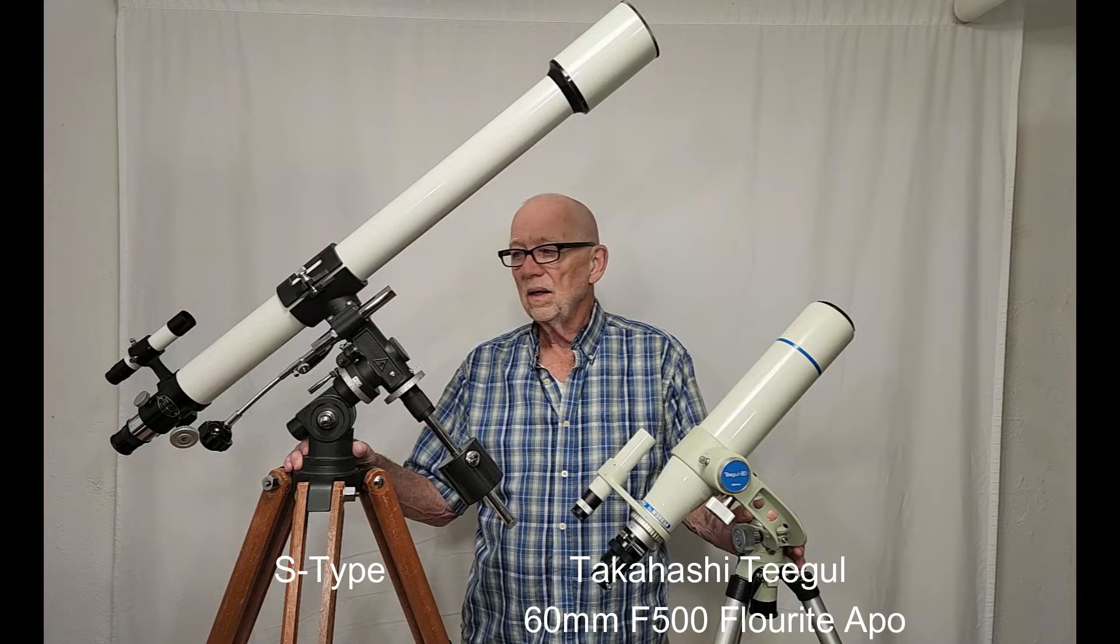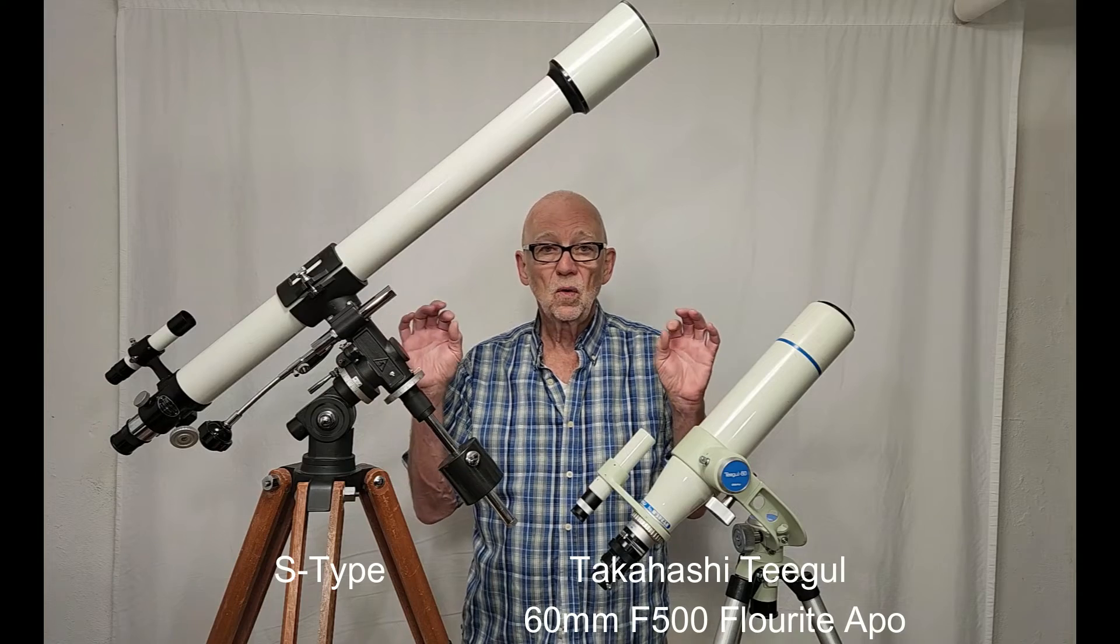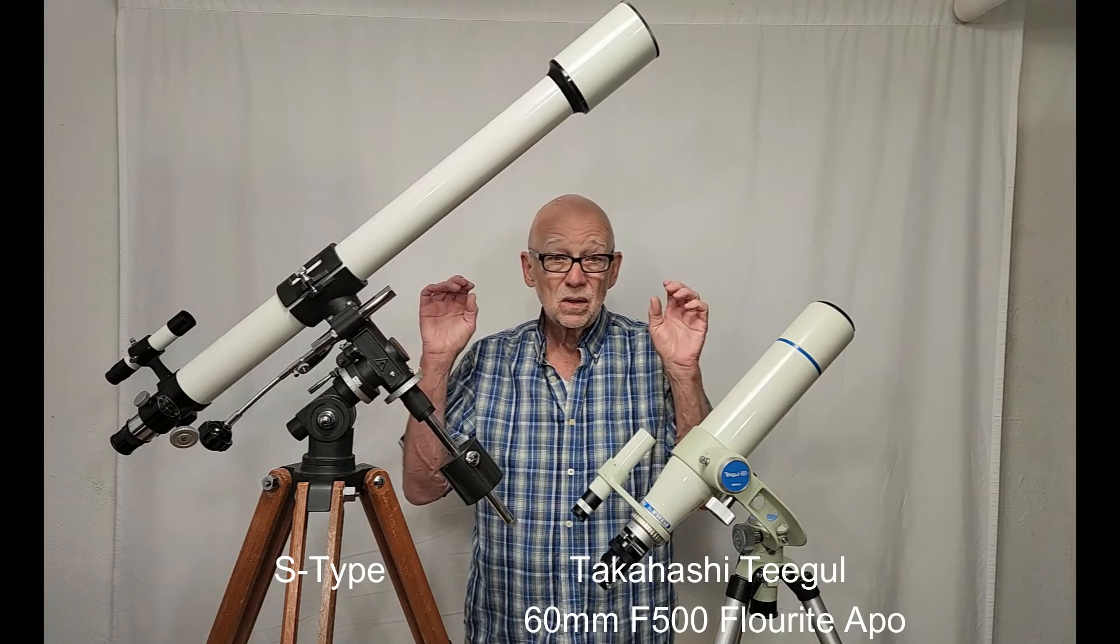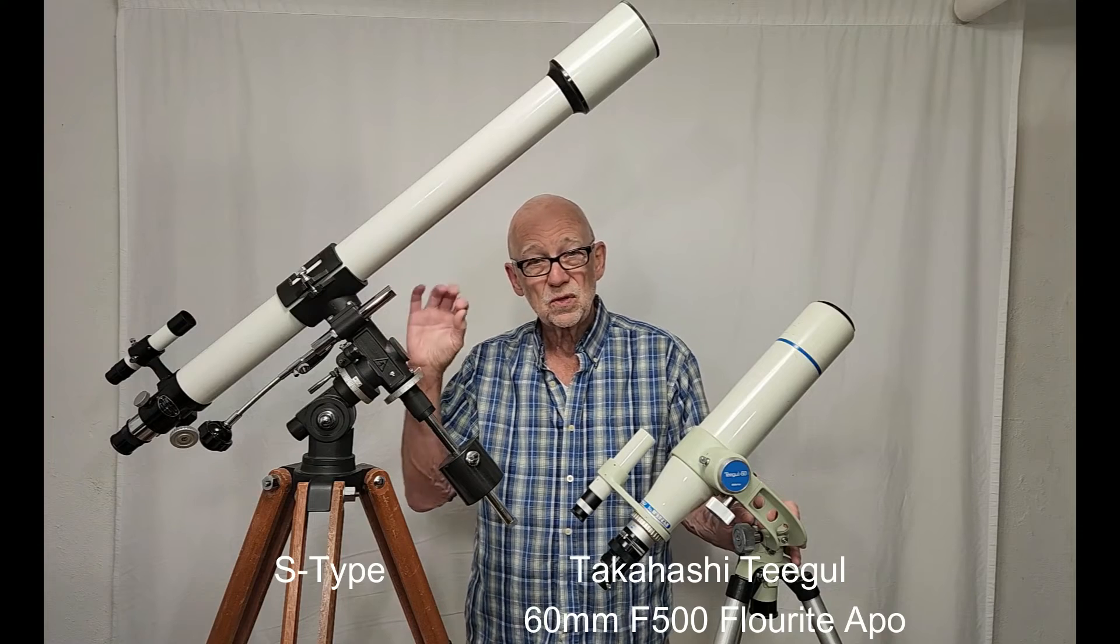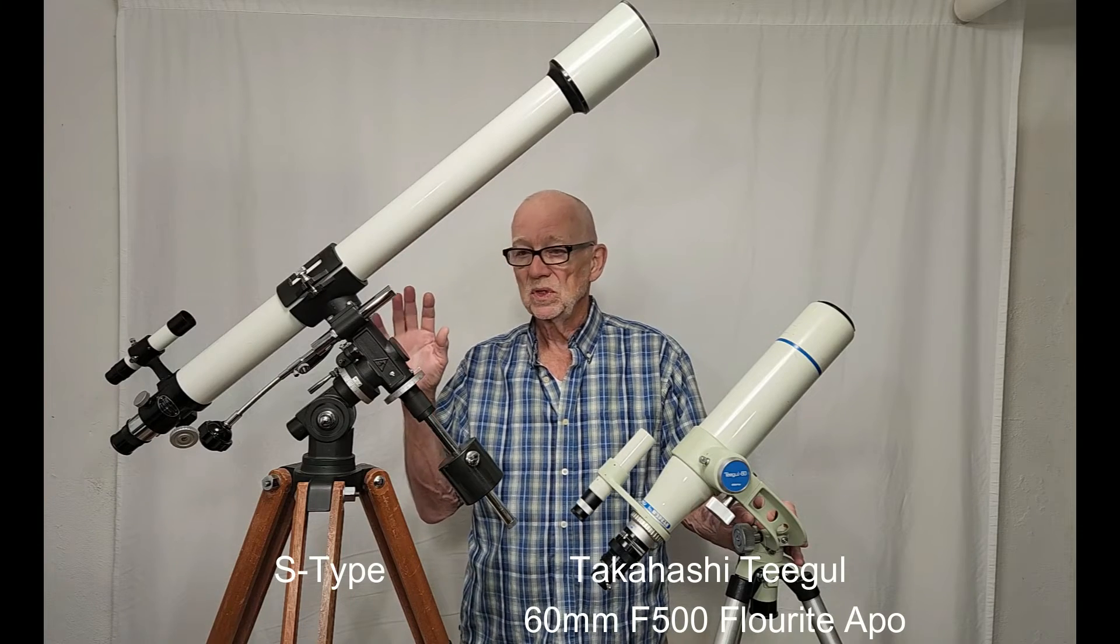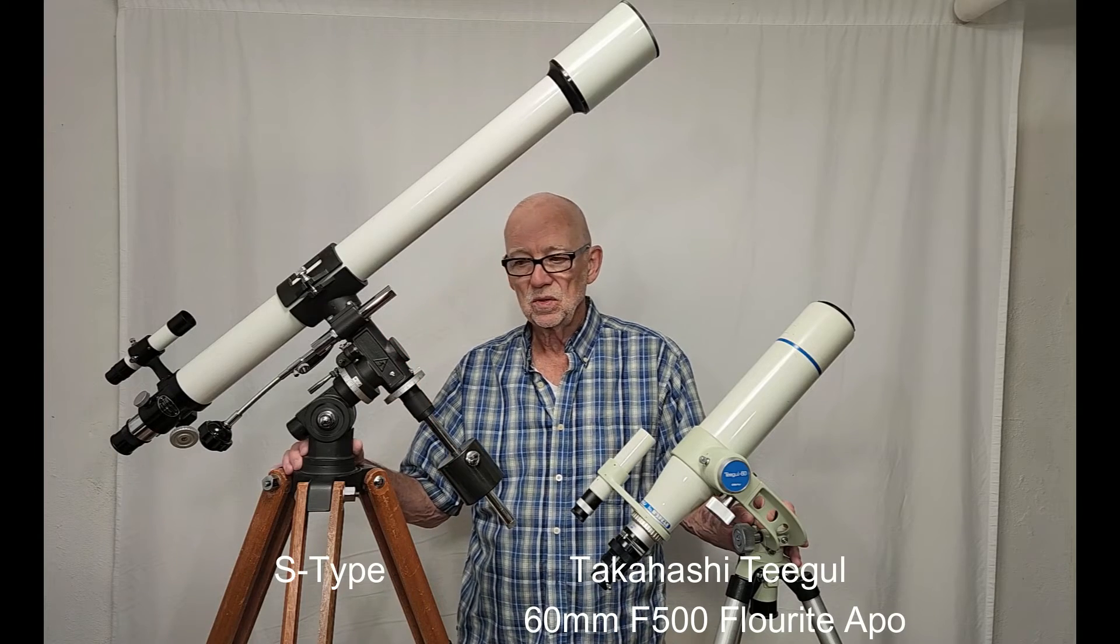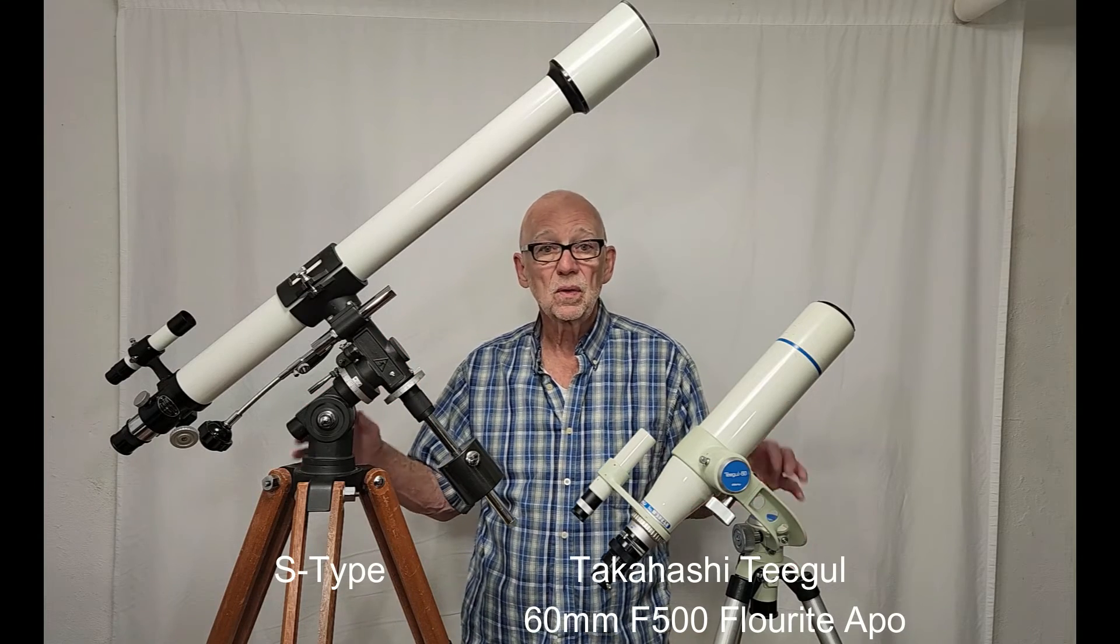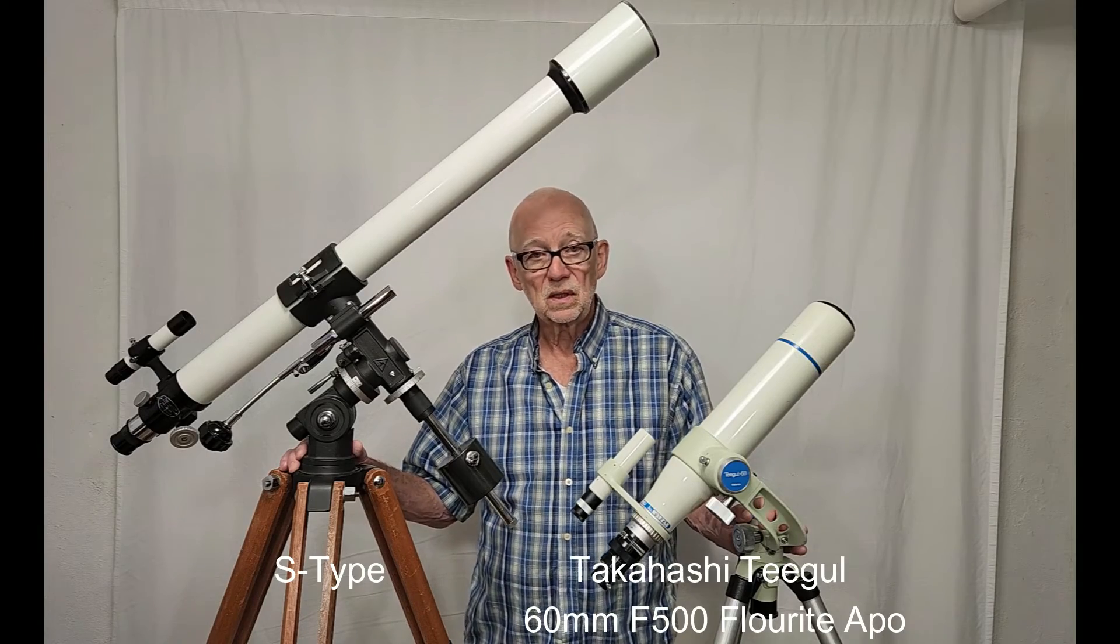And the results are that these telescopes, as far as I'm concerned, performed identically. And the resolution of fine detail on the surface of Jupiter was the same. Both scopes had identical powers anyway. I consider them to be both, to be equal. They're both essentially perfect telescopes.